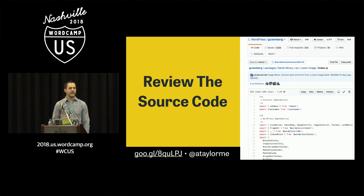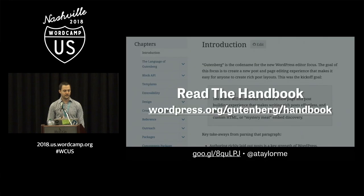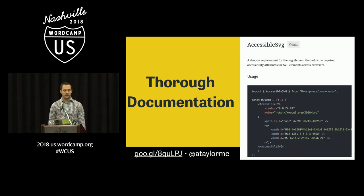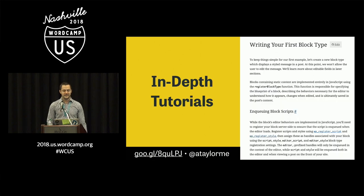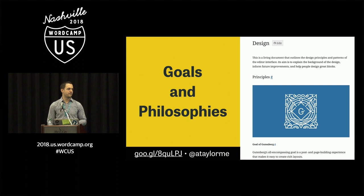Review the source code — this really helped me to actually go look at the core blocks and see how they did things. If you're building an image block or something media-based, go look at the media blocks, the gallery blocks, get an idea for the media placeholder components. A lot of this is documented in the handbook — I really wish I found this sooner. There's thorough documentation on all of the components. Here's an example of an accessible SVG — instead of creating your own SVG, use the SVG component that gives you accessibility. There are in-depth tutorials, tons of code samples, and design principles. If you read one thing in the handbook before you get started, read the design principles. This will help you understand the philosophies of the project and taking that mindset when you go in to develop those experiences will really help.